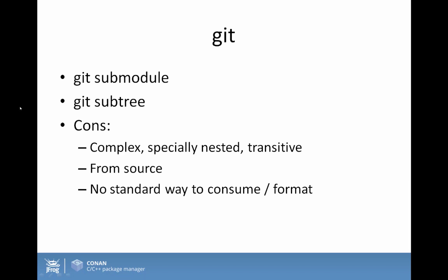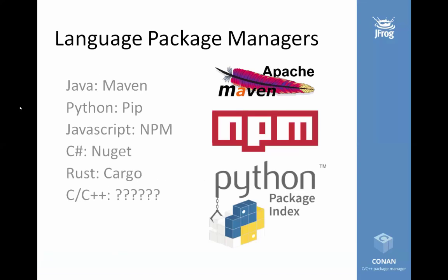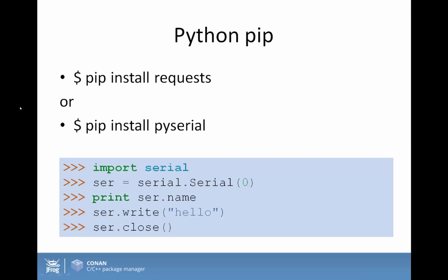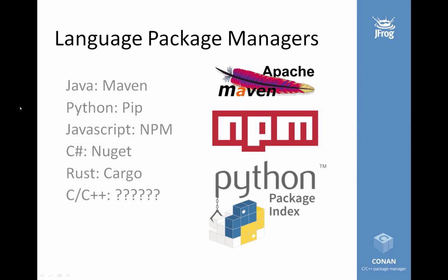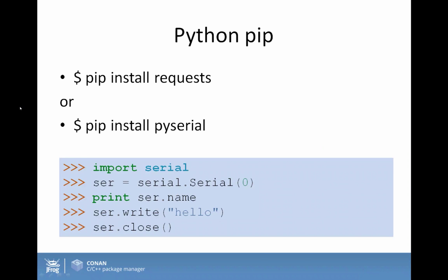So what have other languages been doing? Every modern language has its own tools to manage dependencies and packages — Java has Maven, and so on. For me, having worked in C++ for a long time, when I started working in Python it was amazing. It didn't matter whether I was on Linux or Windows — if I wanted an HTTP client, I'd just run 'pip install requests' and I'd have a very feature-complete, robust HTTP client. It just worked, very easy, just one minute to install.